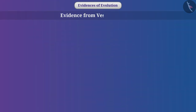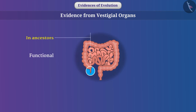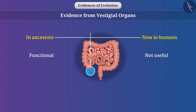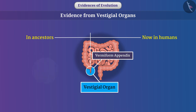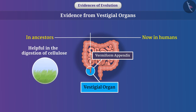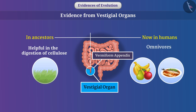Evidence from vestigial organs: Organisms have organs that were functional in their ancestors but are now no longer useful. These are called vestigial organs. For example, in the ancestors of humans, the vermiform appendix was helpful in digestion of cellulose. During development, humans became omnivores and the amount of cellulose in food decreased, making the vermiform appendix a vestigial organ.